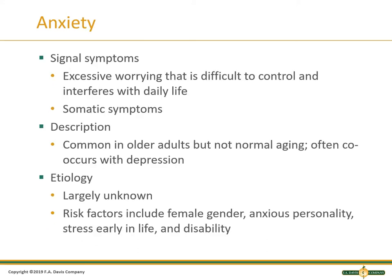Anxiety is very common, especially with COVID. This is the excessive worry that is difficult to control and interferes with daily life. We need some element of control, and when that gets taken from us, we can get anxious. Some people have coping mechanisms to manage that, and some do not. You can have somatic symptoms — headaches, back pain, abdominal pain — all anxiety related. It's common in older adults, but it's not a normal aging process. It often goes hand in hand with depression. The etiology is largely unknown; risk factors include female gender, anxious personality, stressors or traumas early in life, and any disabilities.